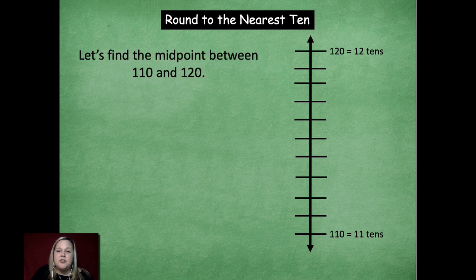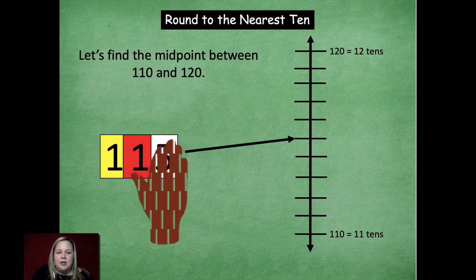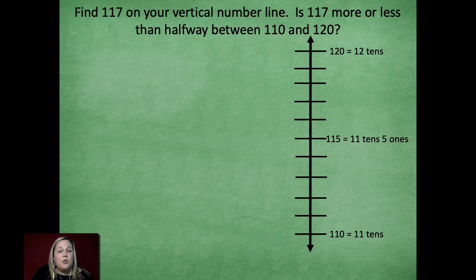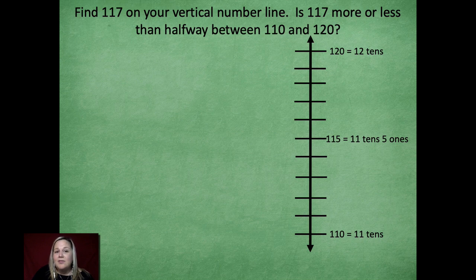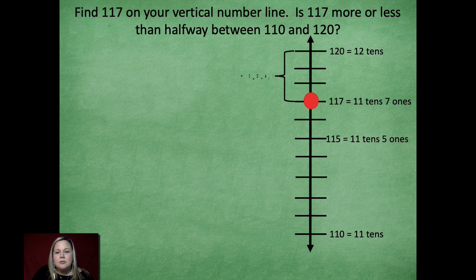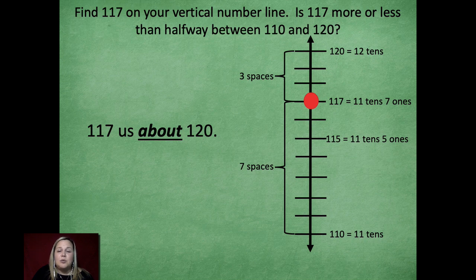Alright, so we're going to find the midpoint between one hundred ten and one hundred twenty. We know that it's going to be that five in there somewhere, right? So, there's one hundred fifteen. Cover up that ones place to help you remember how many tens there are. So there's eleven tens, five ones. Now, we're going to see where one hundred seventeen is and see if it's more than halfway or less than halfway between one hundred ten and one hundred twenty. So let's find one hundred seventeen. There it is. Okay, so is it closer with three spaces to one hundred twenty or seven spaces to one hundred ten? Which one's closer, friends? Yeah, it's closer to one hundred twenty. So one hundred seventeen is about one hundred twenty.